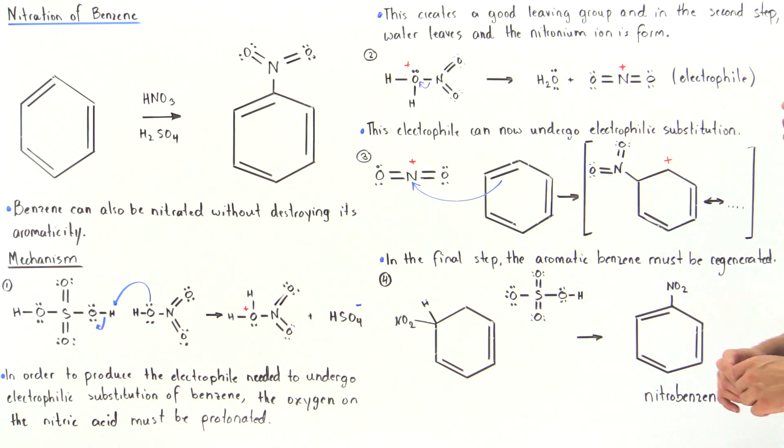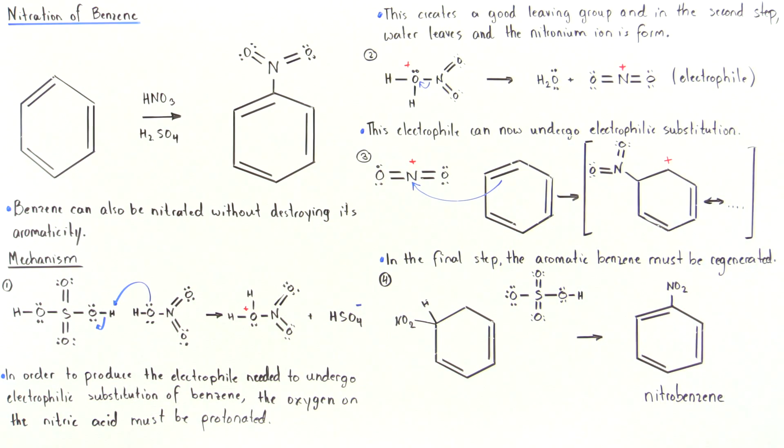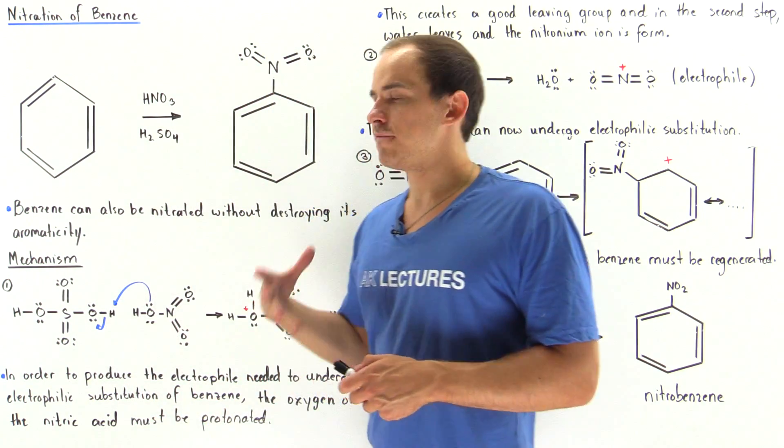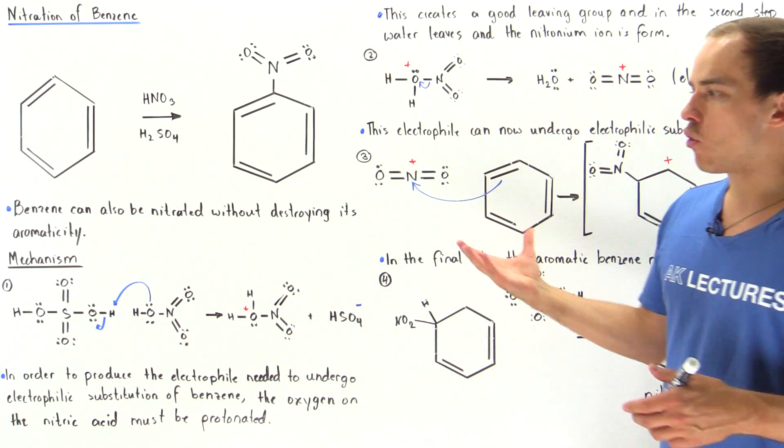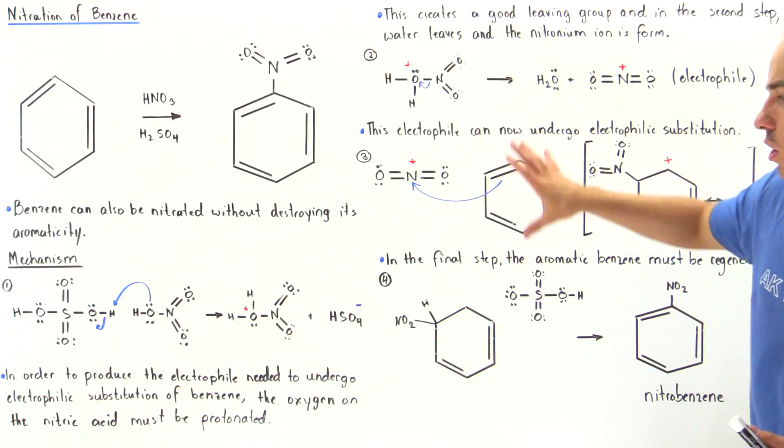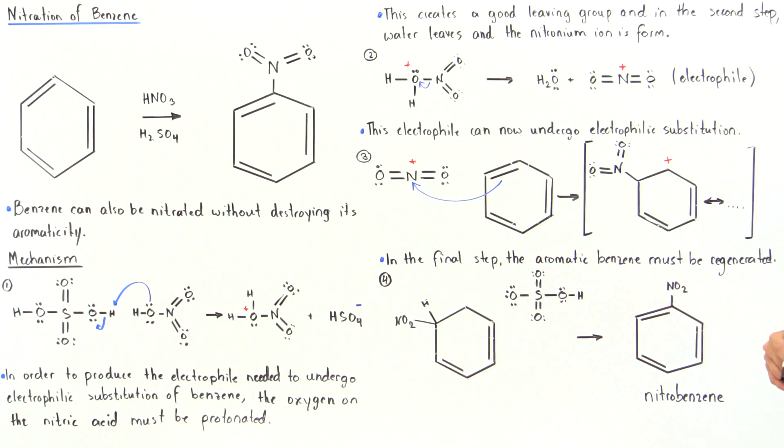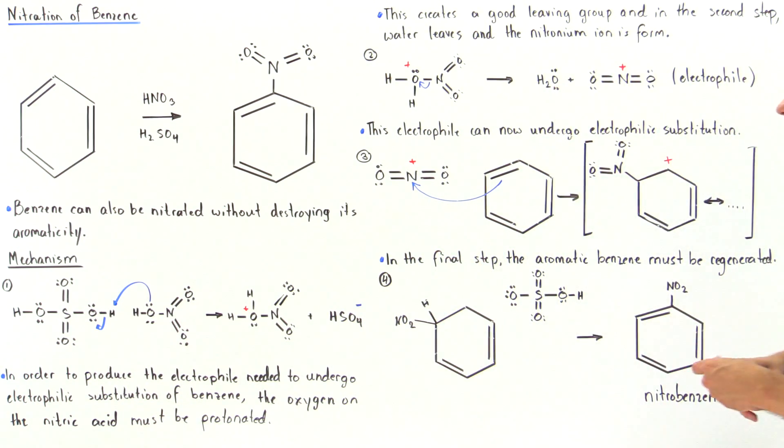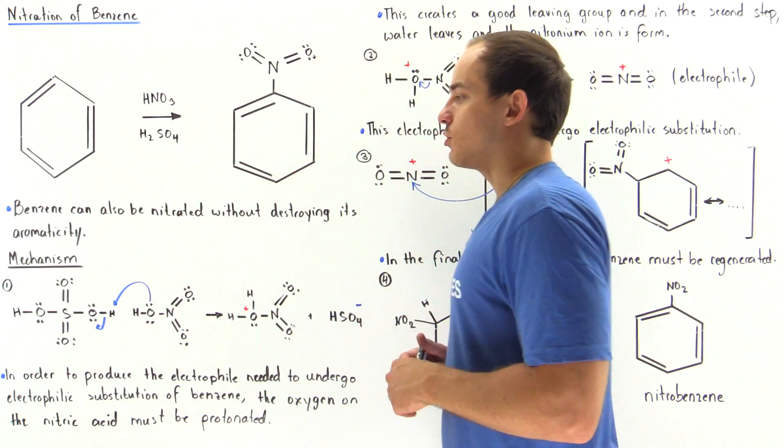We can also undergo a reaction known as nitration of benzene to form nitrobenzene. We take nitric acid and mix it with sulfuric acid, place benzene inside that solution, and form our nitrobenzene via this four-step mechanism. Let's examine these four steps in which we form nitrobenzene while keeping our aromatic ring.